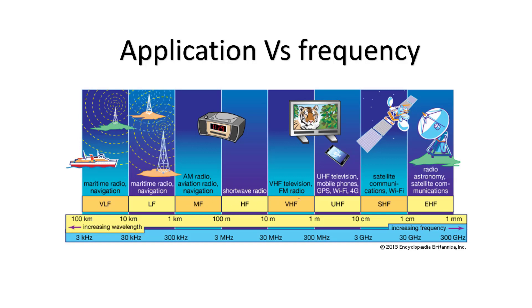Then we are increasing and going to TV range, and here we have the mobile application range. This is used for mobile, starting from 300 megahertz up to 3 gigahertz. The wavelength is 1 meter and decreasing to 10 centimeter as we increase the frequency. It's called ultra high frequency, with applications like GPS, Wi-Fi, and 4G.